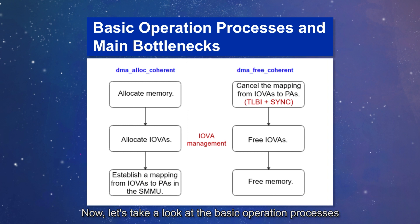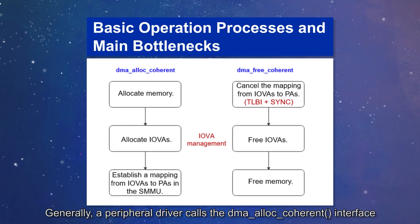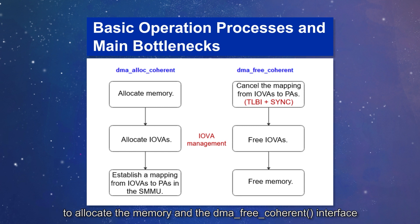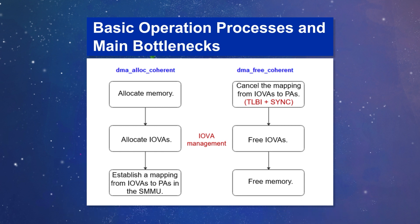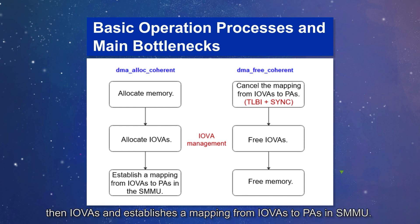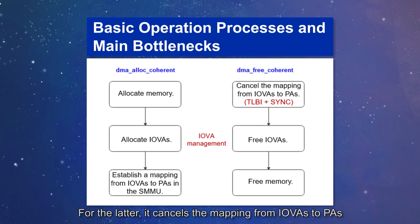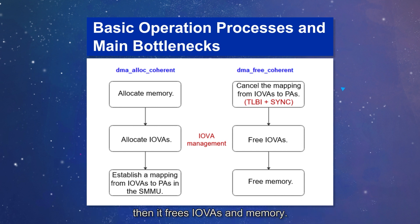Now let's take a look at the basic operation processes and primary bottlenecks encountered. Generally, a peripheral driver calls the DMA allocation coherent interface to allocate memory, and the DMA-free coherent interface to free the memory allocation. The former process first allocates memory, then an IOVA, and establishes a mapping from IOVA to physical address in the SMMU. For the latter, it cancels the mapping from IOVA to physical address and executes TLBI to clear the mapping cached in the TLB, then frees the IOVA and memory.